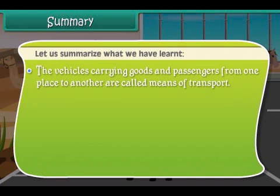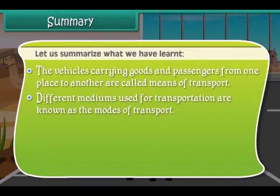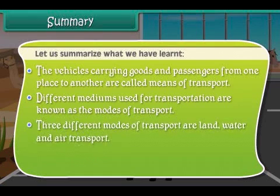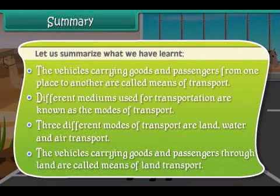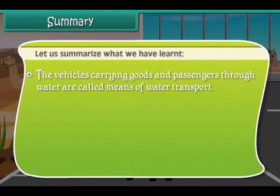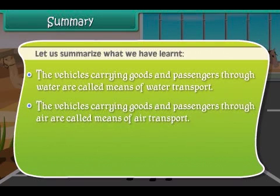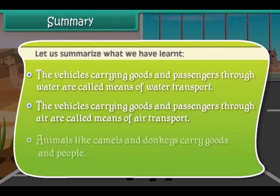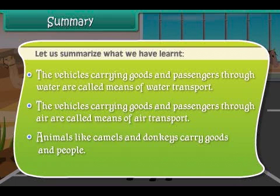The vehicles carrying goods and passengers from one place to another are called means of transport. Different mediums used for transportation are known as the modes of transport. Three different modes of transport are land, water and air transport. The vehicles carrying goods and passengers through land, water and air are called means of land transport, water transport and air transport respectively. Animals like camels and donkeys also carry goods and people.